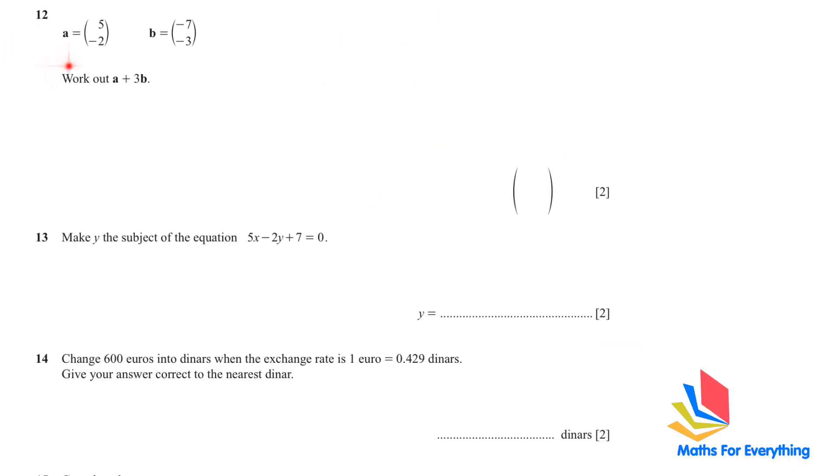Question number 12 is a vector question. Work out A plus 3B. So what is A? 5 negative 2 plus 3B. So we write 3 and we write B. We multiply 3 with negative 7, we get negative 21. 3 multiplied by negative 3, negative 9. So now we are going to add 5 plus negative 21. That will give us negative 16. And negative 2 plus minus 9. That will give us negative 11. So that's our answer.